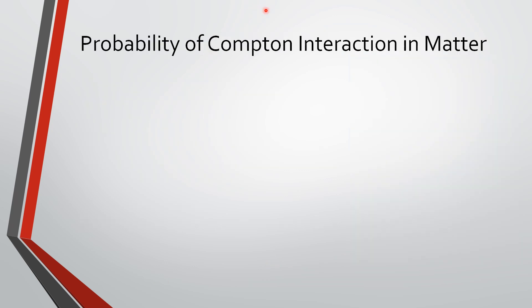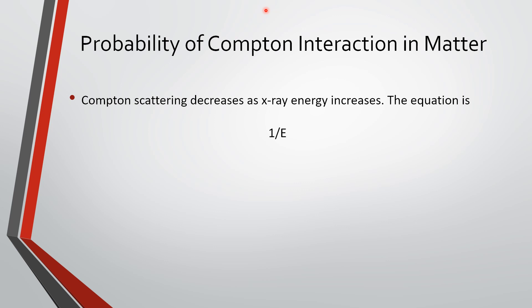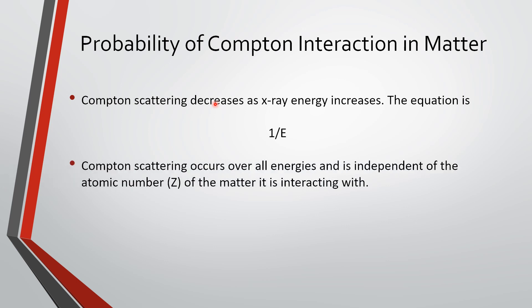Compton scattering decreases as x-ray energy increases. As we increase the KVP, Compton scattering is going to happen less often — the equation is 1/E. If energy is 2, it occurs with probability 0.5; if energy becomes 4, it's 0.25. Compton scattering occurs over all energies and is independent of the atomic number — it doesn't matter what the atomic number of the material is. It's only dependent on energy.